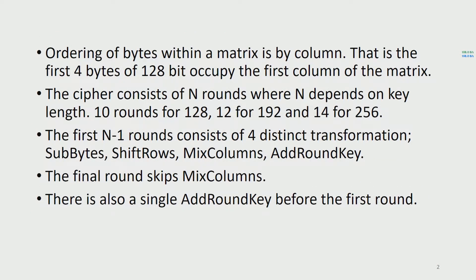Ordering of the message within a matrix is by column — the first 4 bytes of the 128-bit message occupy the first column of the matrix. The cipher also consists of n rounds, where n depends on the key length: 10 rounds for 128-bit encryption, 12 for 192, and 14 for 256-bit.